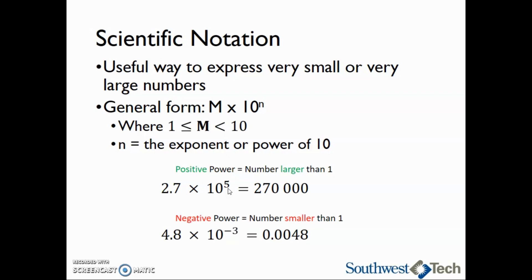If we have a negative power or negative exponent, that means we have a number smaller than 1. In this case, we have an exponent of negative 3. So we move our decimal point three places to the left to give us a number that is smaller than 1. So 4.8 × 10^-3 is equal to 0.0048.